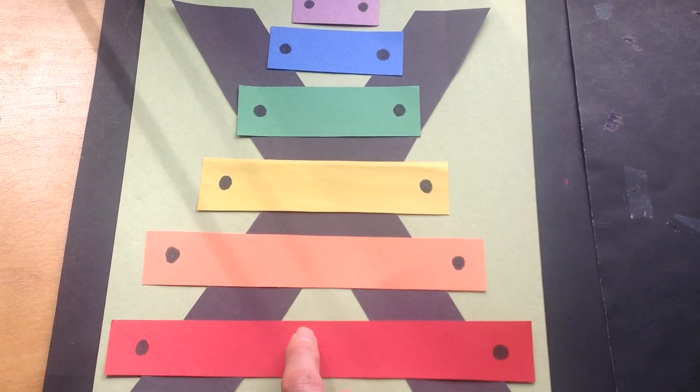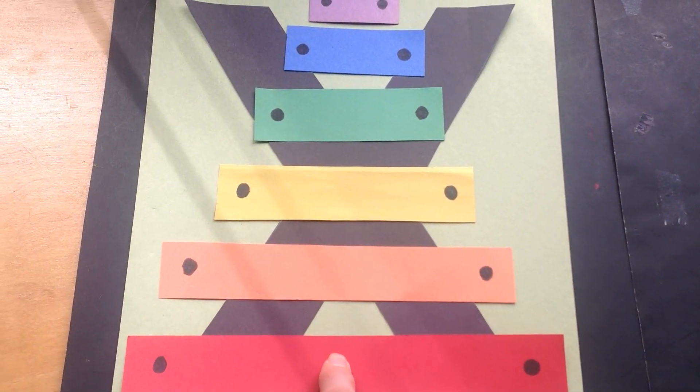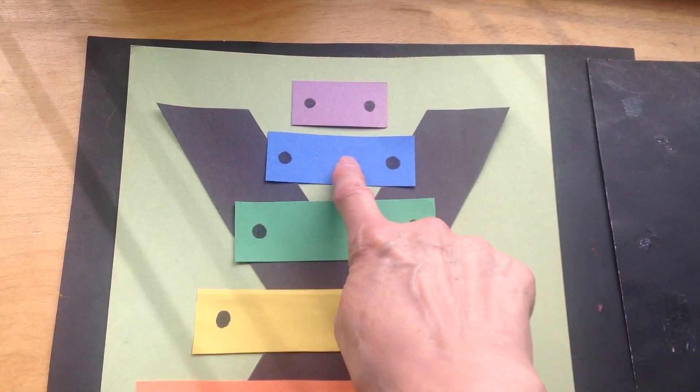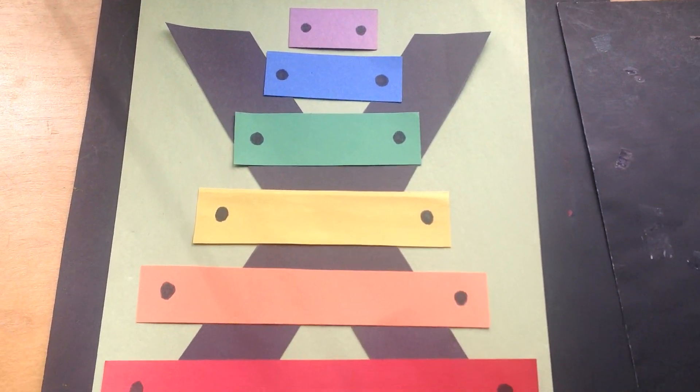Now let's say the colors in English. Red. Orange. Yellow. Green. Blue. Purple. Great job.